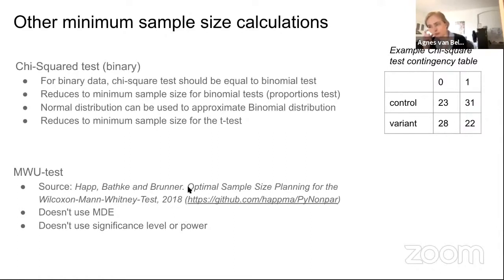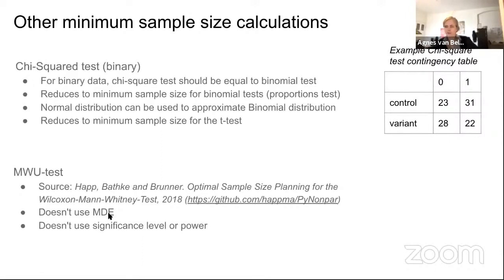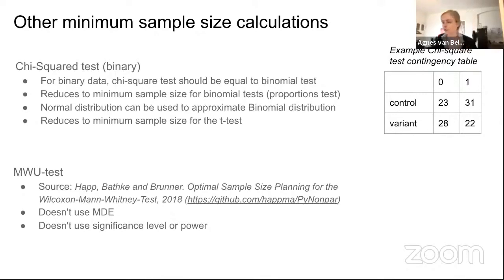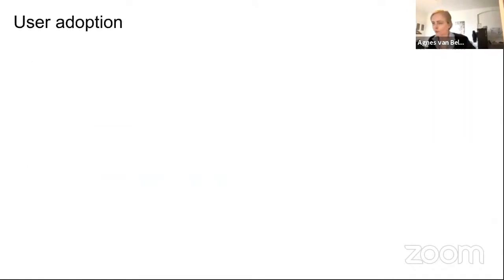There is also a Python library for non-parametric tests in general. It differs from the t-test and chi-square ones because it does not use minimum detectable effect, significance level, or power directly.